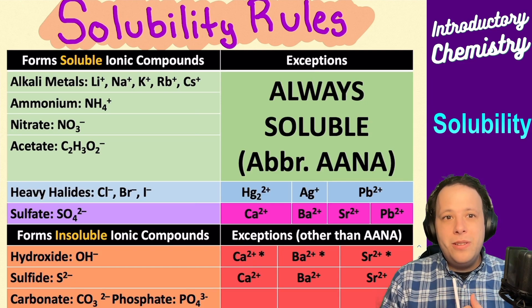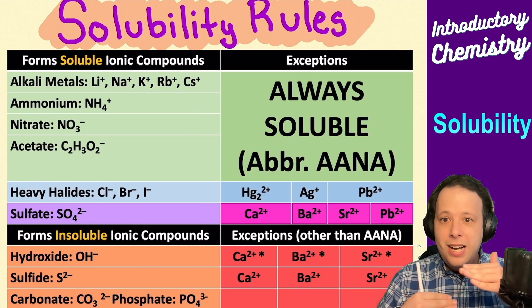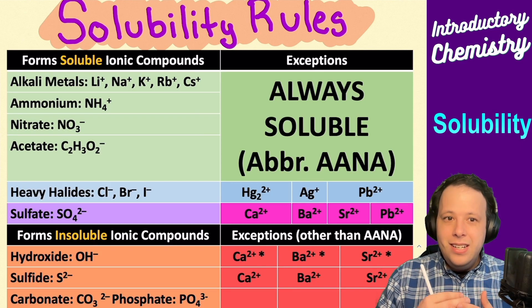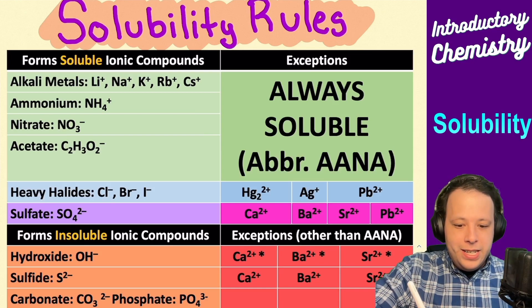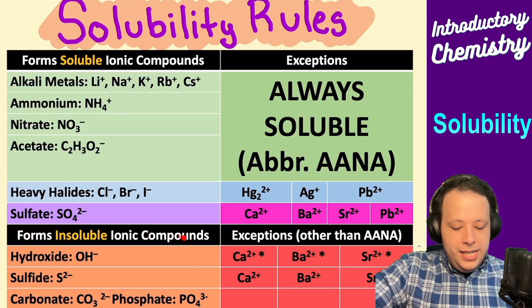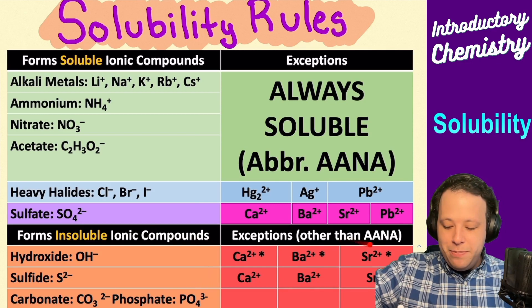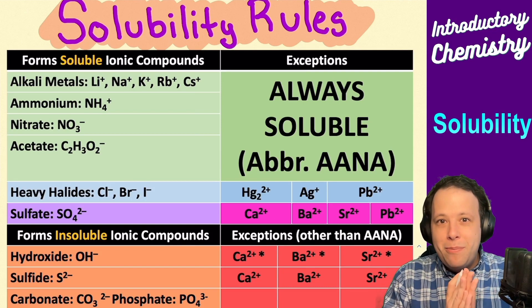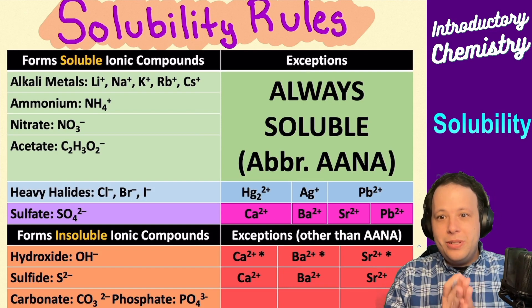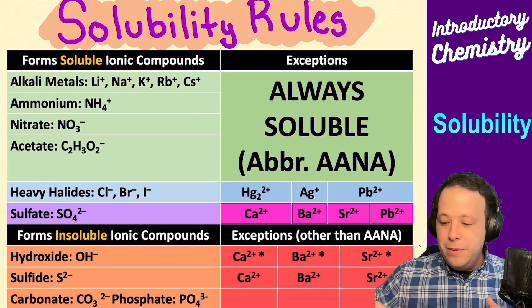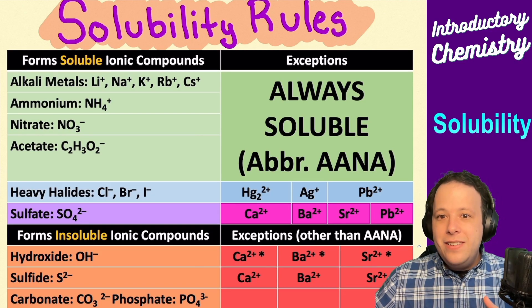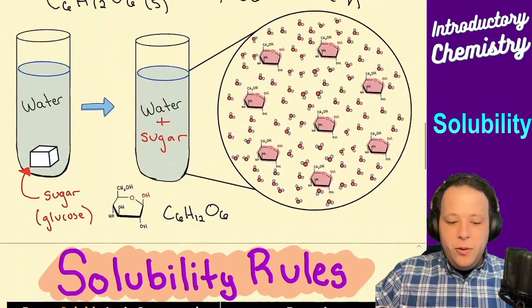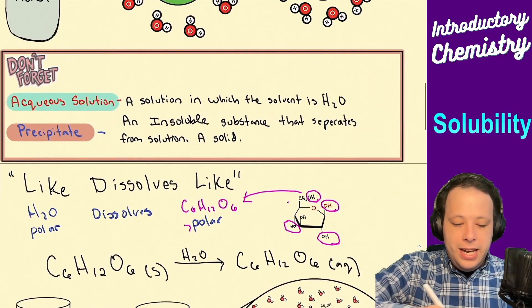The way the chart works: the top is always soluble except when bound to certain ions, and the bottom is always insoluble except when bound to certain individual ions. If something is insoluble — meaning it won't break down — it's going to form something known as a precipitate.